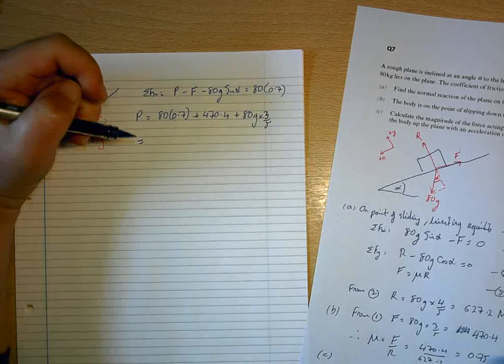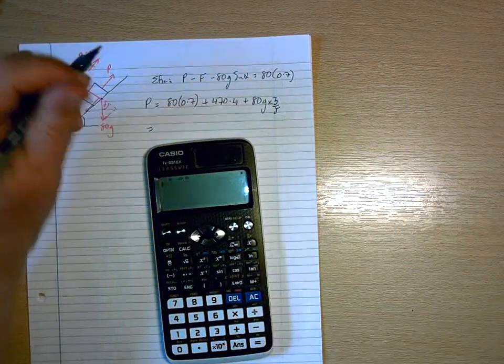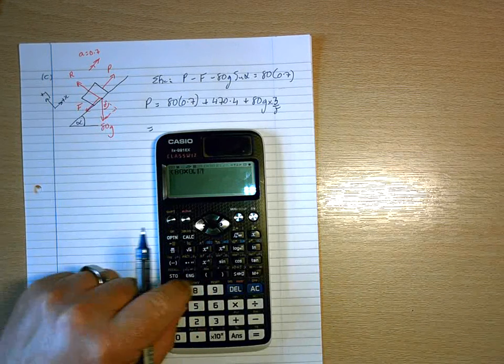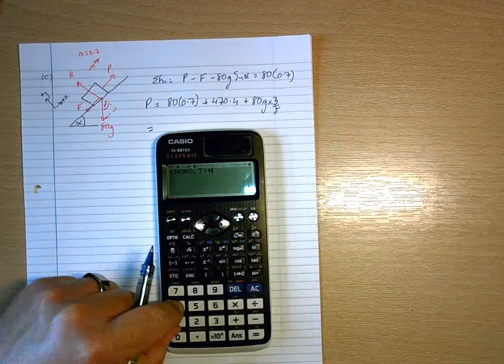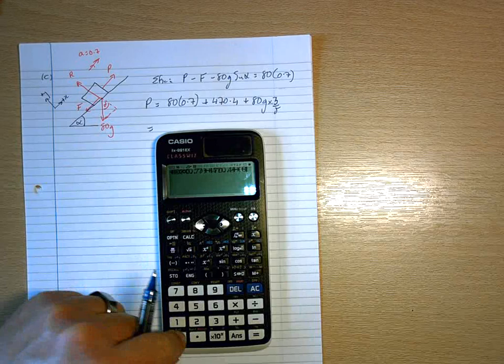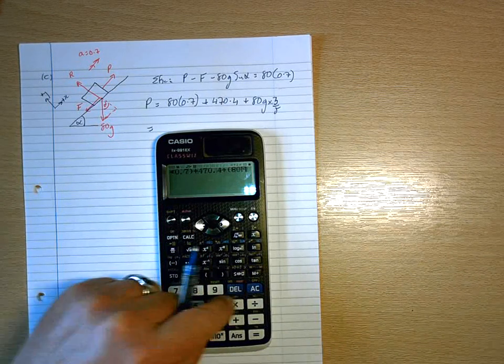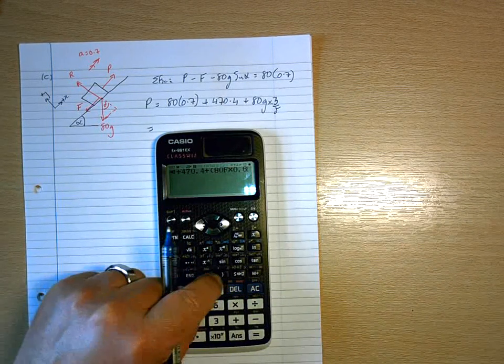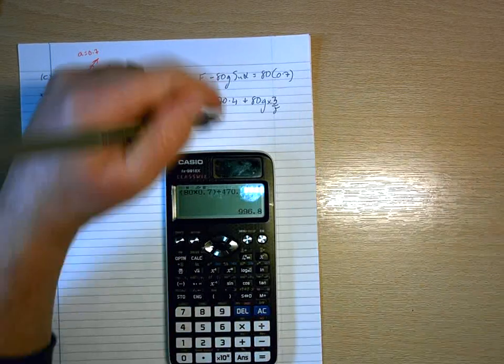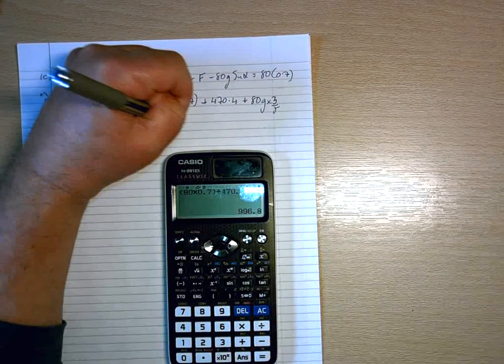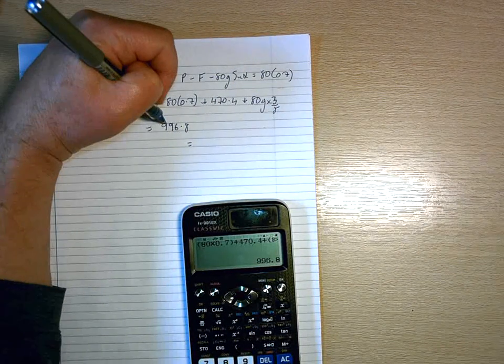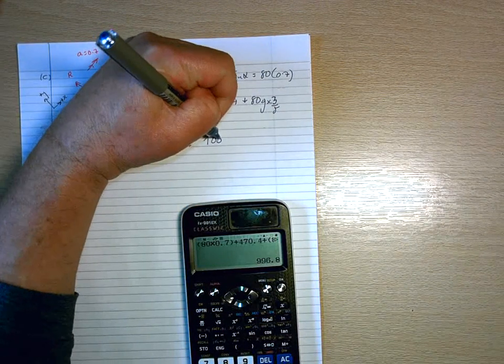Here we go. So I've got 80 times 0.7 plus 470.4 plus 80g times three-fifths, which gives 996.8, which to two significant figures is going to be a thousand newtons.